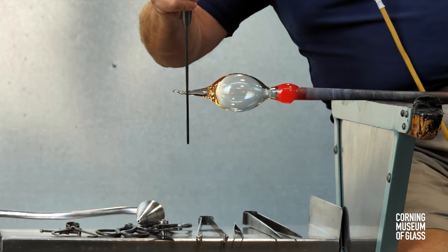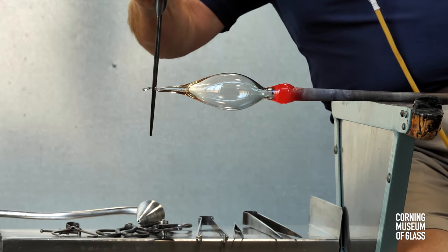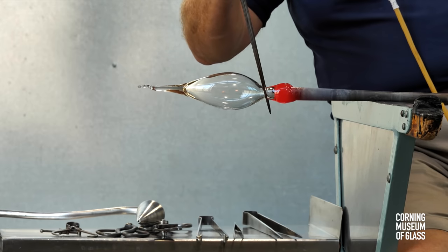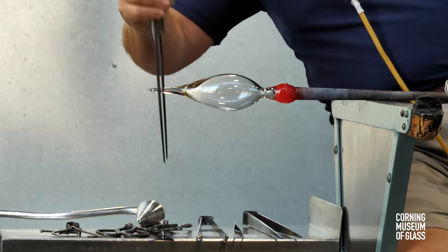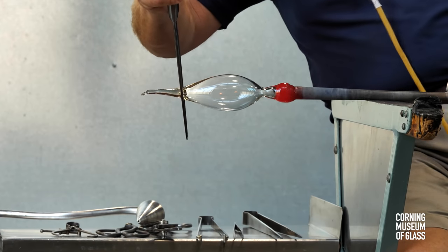The glass is inflated, elongated, and a carefully made constriction near the blowpipe will allow the vessel to be broken free of it later in the process.